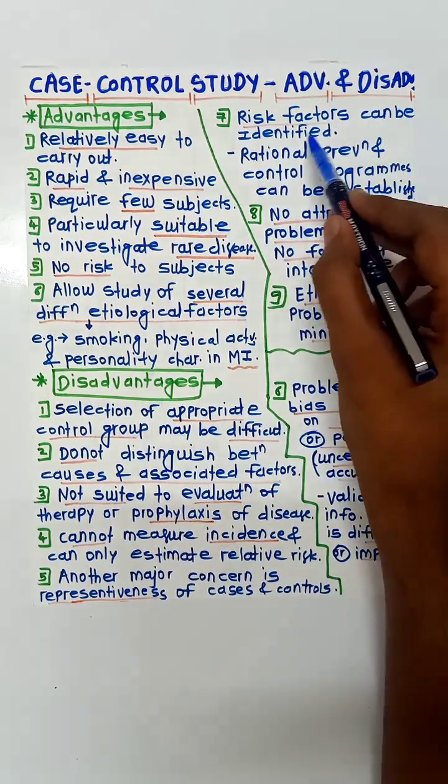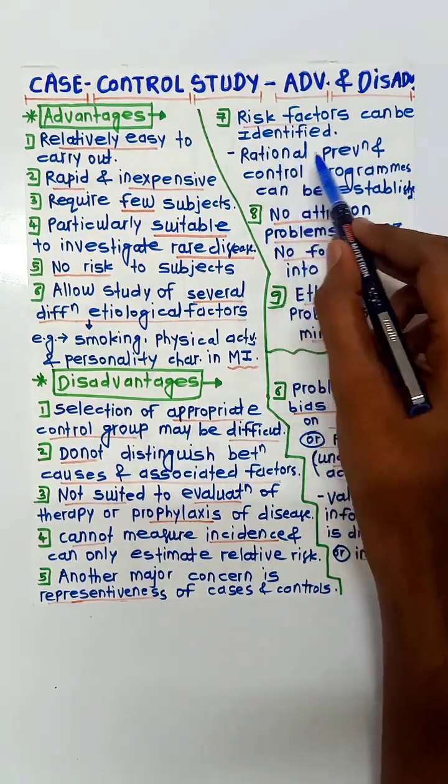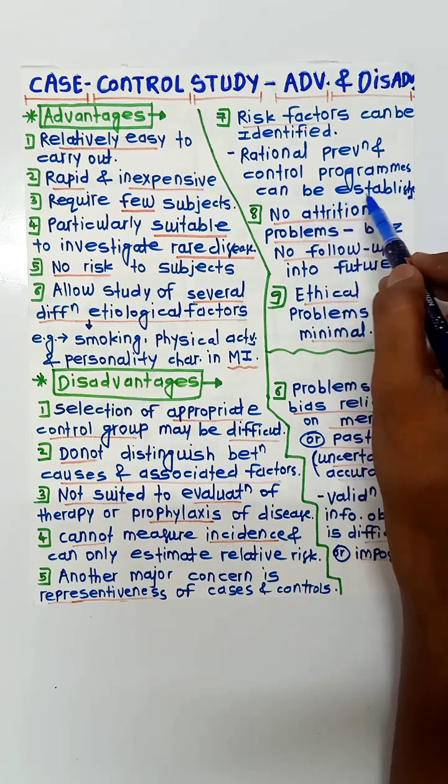Next, risk factors can be identified so rational prevention and control programs can be established.